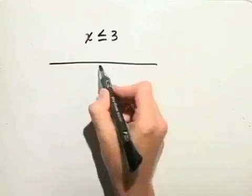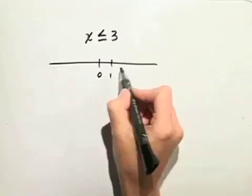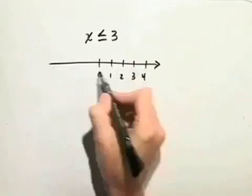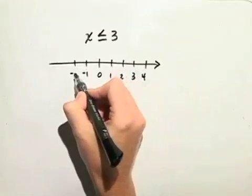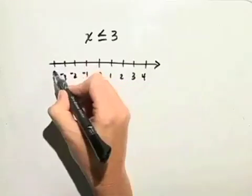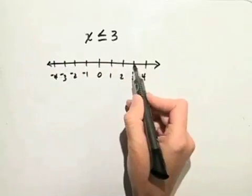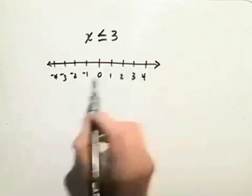On our number line, we're interested in the number 3. Here's 3, and we want x to be less than or equal to 3.